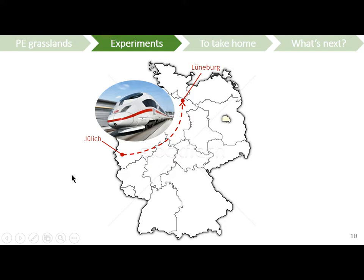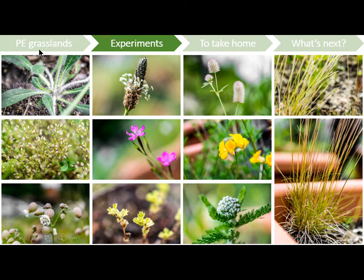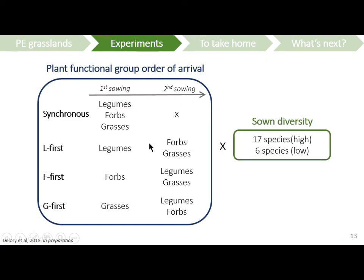Now let's move from Jülich to Lüneburg in North Germany, where I am currently doing my postdoc. In Lüneburg, you can find dry acid grasslands characterized by very nutrient-poor and sandy soil. When you look at the species present in these grasslands, they are mainly forb-dominated — mainly non-nitrogen-fixing forbs — with a few leguminous species like Trifolium arvense and a few grasses. So they are quite different from the more mesic grasslands we studied in Jülich. When I arrived in Lüneburg, we set up a mesocosm experiment to see if we could find the same patterns as in Jülich for dry acid grasslands.